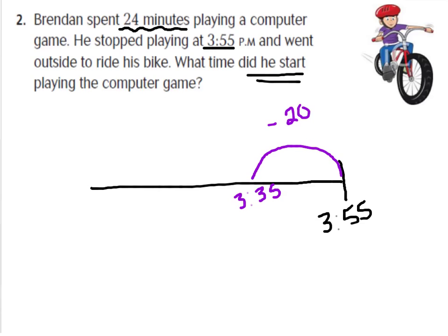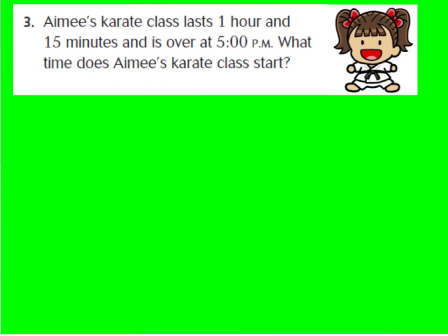I still have 4 more minutes because he played for 24 minutes, so I'm going to subtract another chunk of 4 minutes. 35 minus 4 is 31, so it would be 3:31 p.m. That's what time he started playing his computer game. We've had to find the start time this time, and when you have to find the start time, you subtract instead of add minutes.